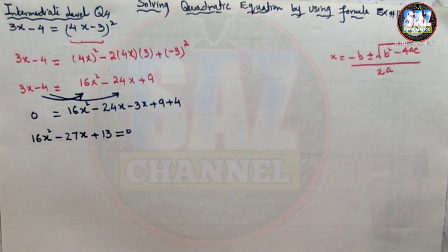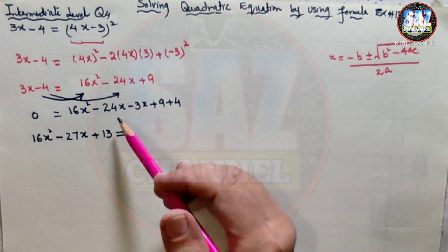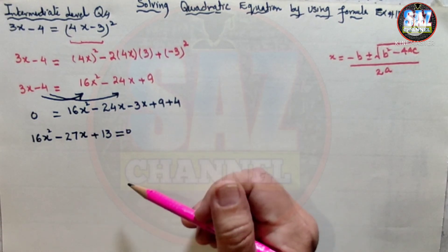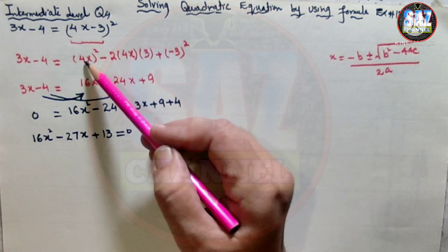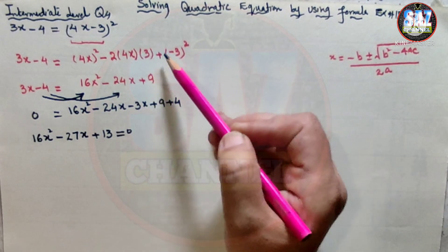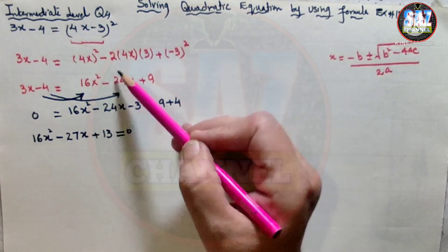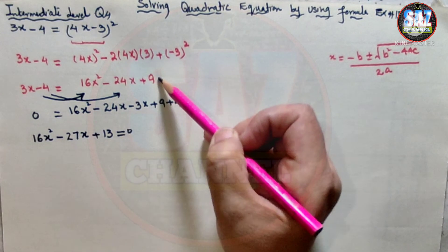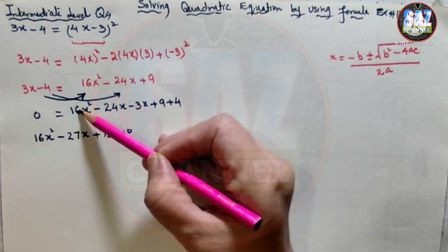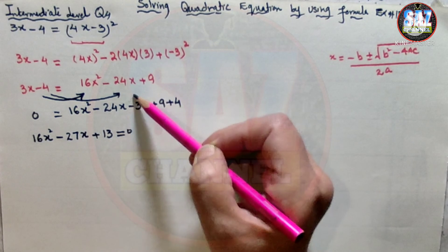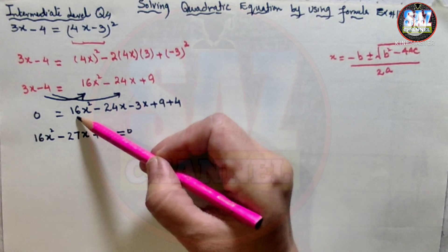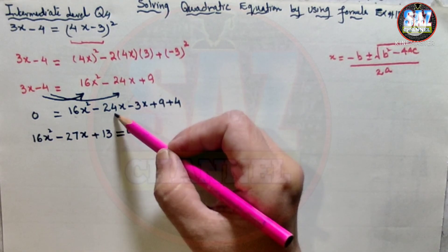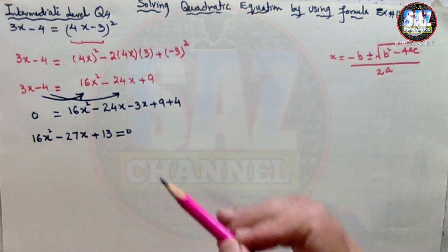My equation is now in standard quadratic form. Let me recheck my working — I always advise students to double-check before moving to the next step. According to the identity (a minus b) squared: 16x squared minus 24x plus 9, then shifting 3x gives minus 27x, and plus 9 plus 4 gives 13. So the equation is confirmed: 16x squared minus 27x plus 13 equals 0.